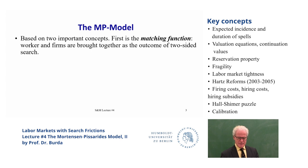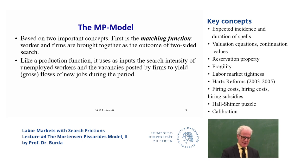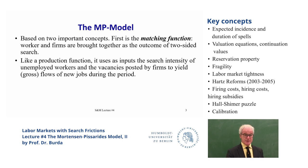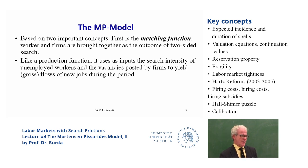There are two things common with the Pissarides model. The first is the matching function — firms and workers are brought together as a result of two-sided search. This is like a reduced form of the matching process we'll discuss for the rest of the course: a way of measuring how workers and firms are brought together in a job market. Without much to say about the process of rejection or whether you really fit. This model assumes everyone's the same — we come together randomly, and just on the basis of that randomness, unemployment arises.